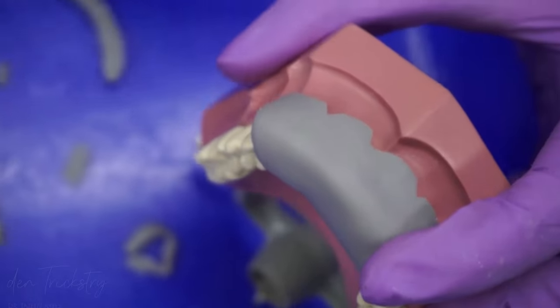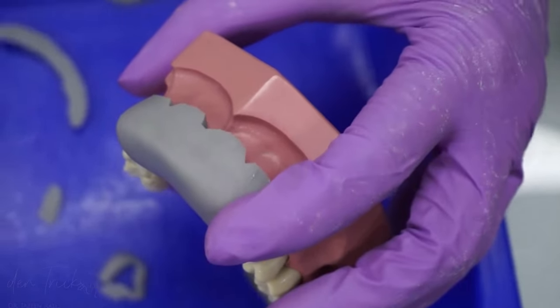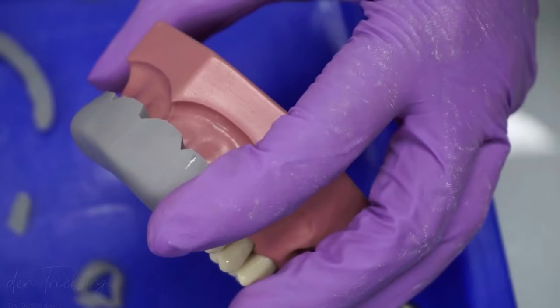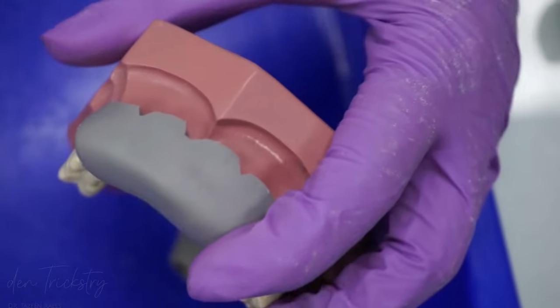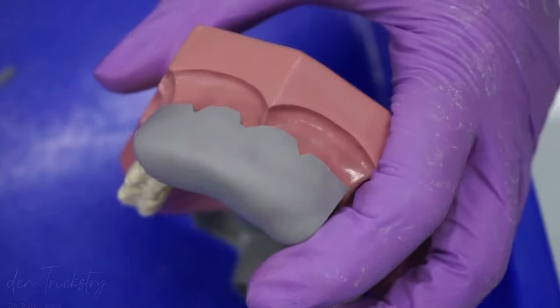The next thing to do is to have a reference mark so that whenever you place the index on the teeth, it will be positioned correctly. In this case, the labial frenum is my reference.